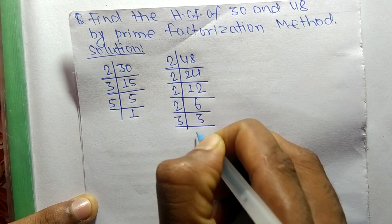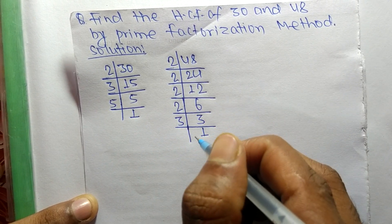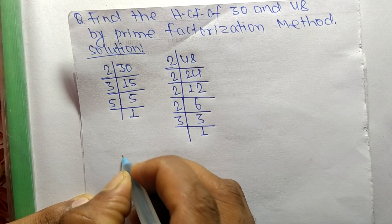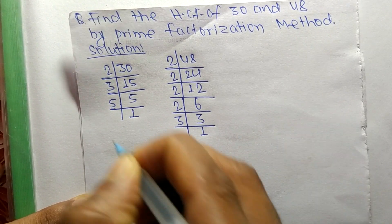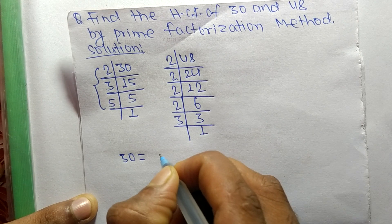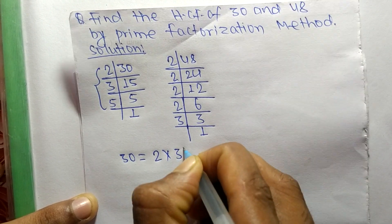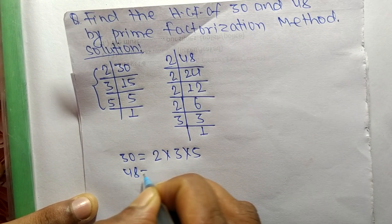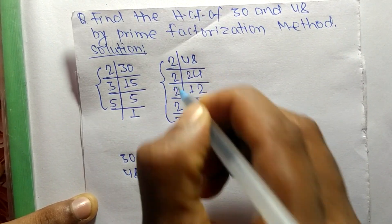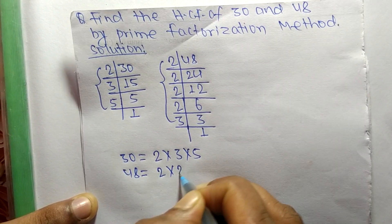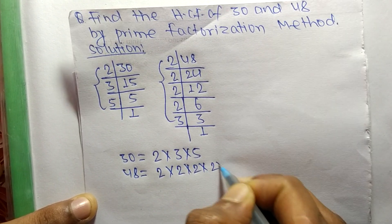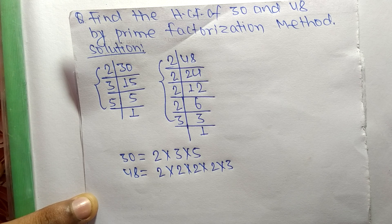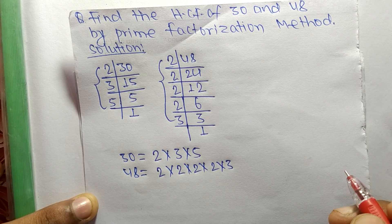And 3 times 1 equals 3. So from these prime factors we can write: 30 is equal to 2 times 3 times 5, and 48 is equal to 2 times 2 times 2 times 2 times 3.